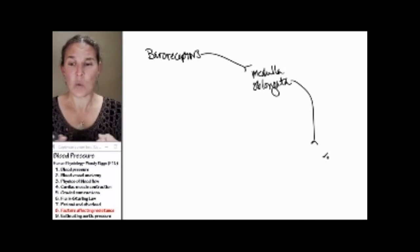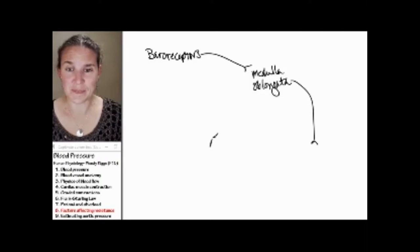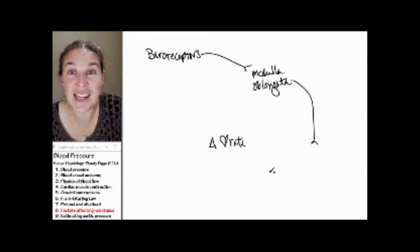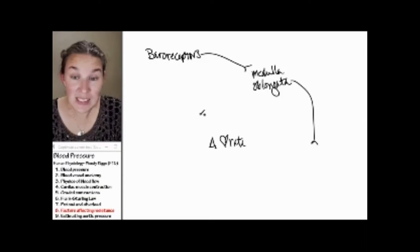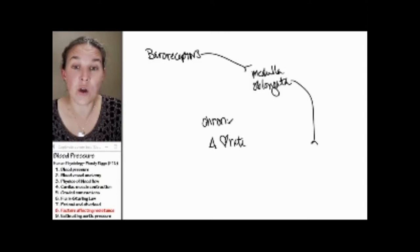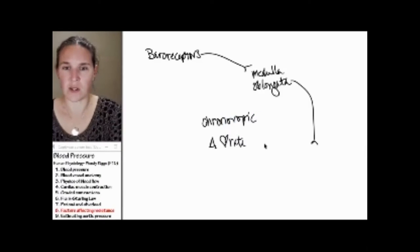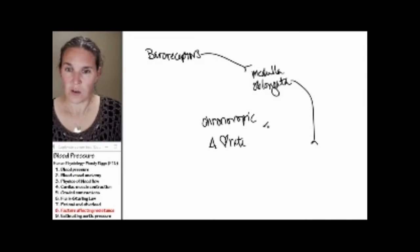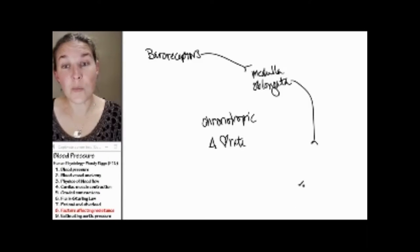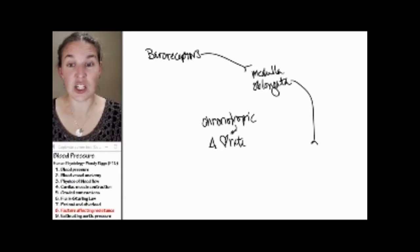We could change heart rate. If you change heart rate, substances that change heart rate are called chronotropic. Where did that come from? Chronotropic substances change the heart rate.